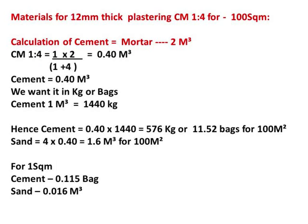The breakup per square meter, dividing by 100, comes to cement 0.11 bags and sand 0.016 cubic meters per square meter for 12 mm thick plastering at 1:4 ratio.